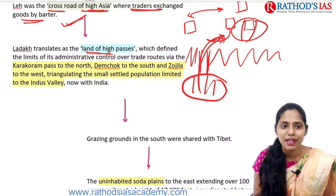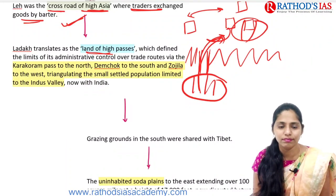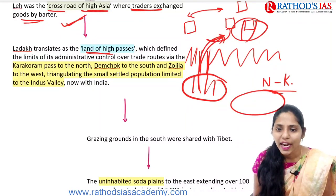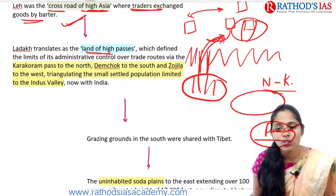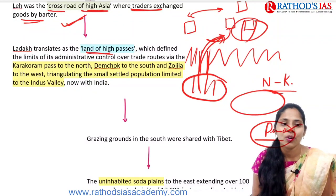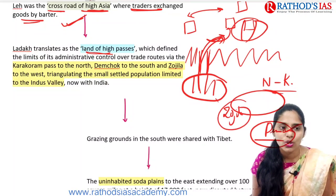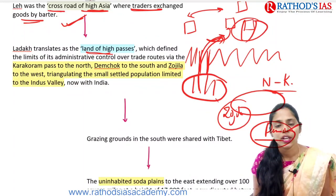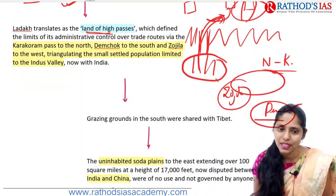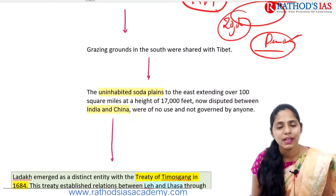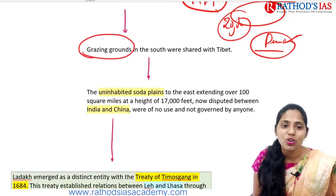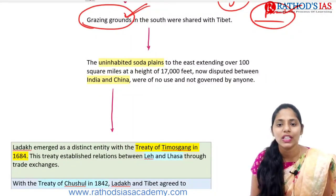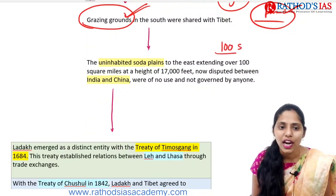Ladakh defined the limits of its administrative control over trade routes. In the northern region we have the Karakoram Pass, and in the south we have Demchok, which is also a current conflict area. In the west we have the Zoji La pass, with some limited valley settlements. Parts lie in India and parts in Pakistan. Towards the east there are grazing grounds important for tribal people who rear animals, and some uninhabited soda plains covering about 100 square miles.